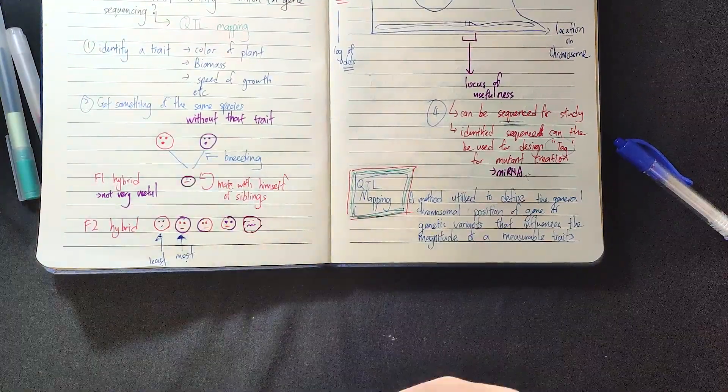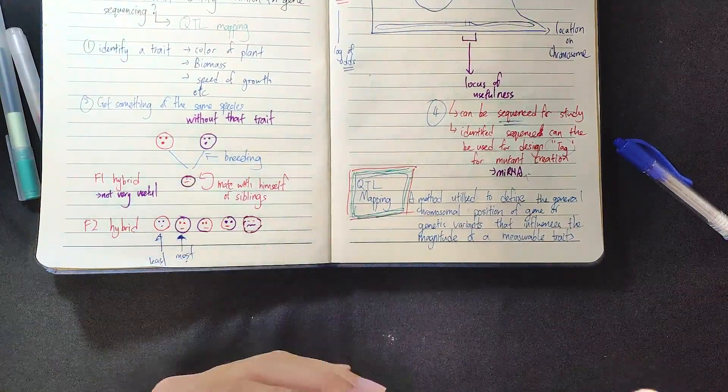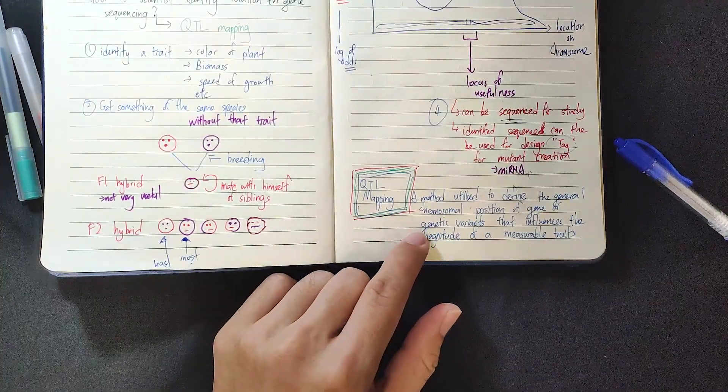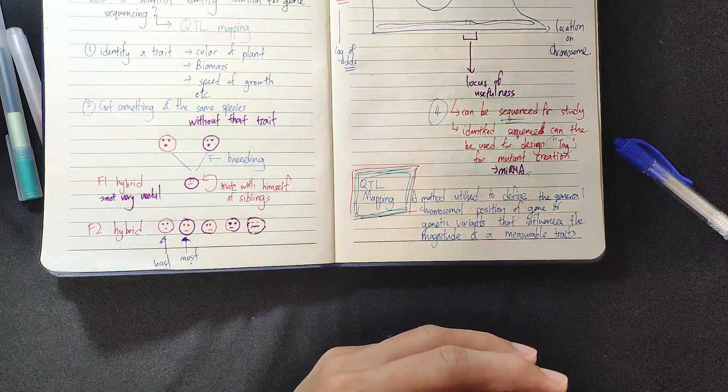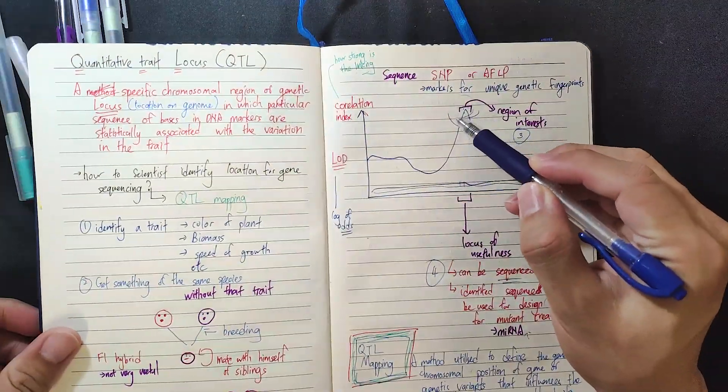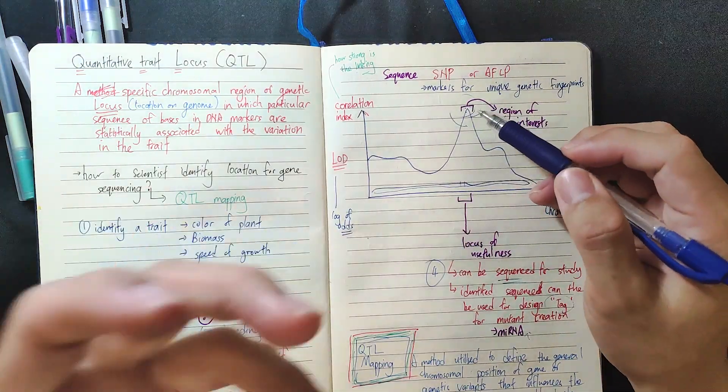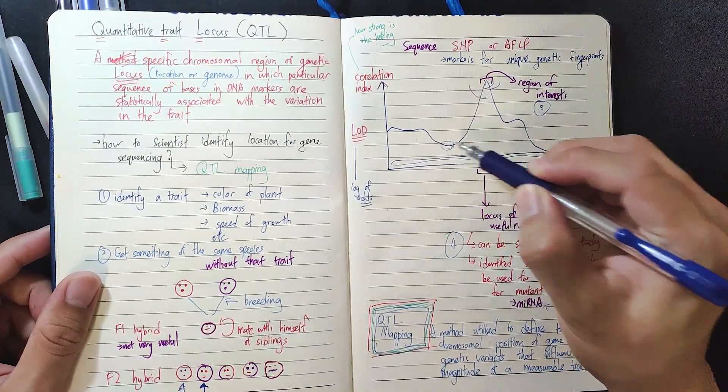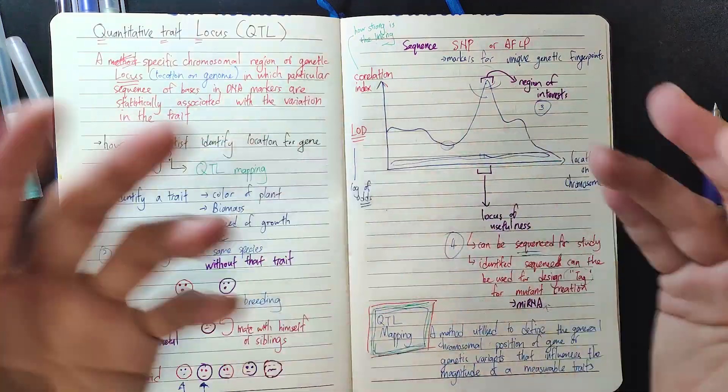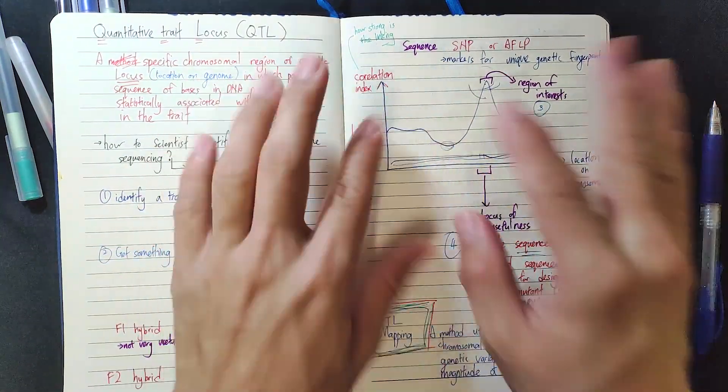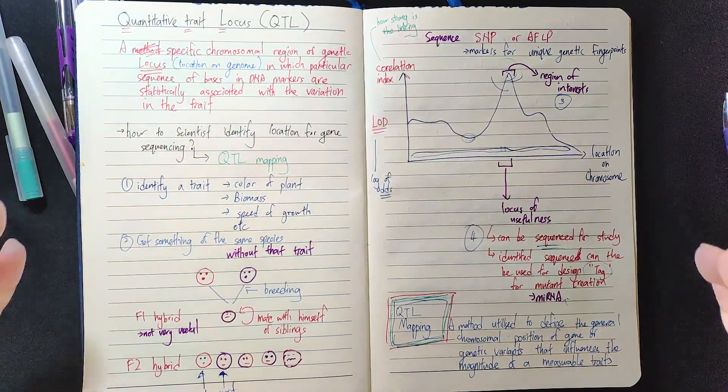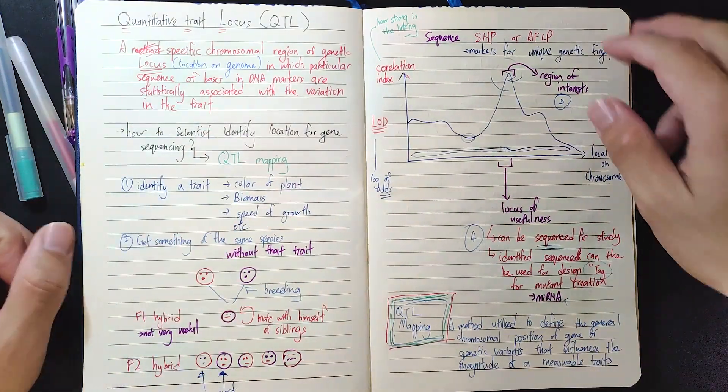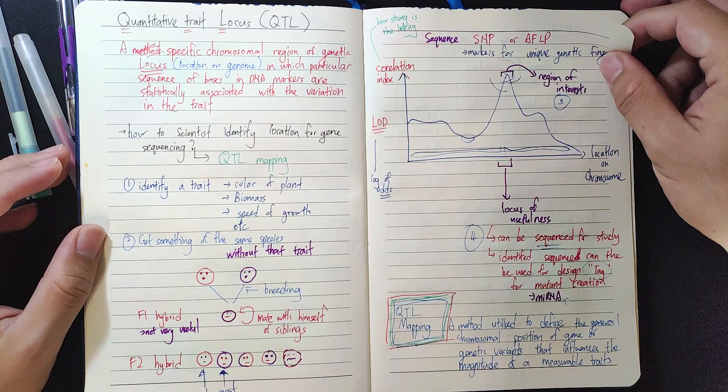So the whole process that we're trying to say here is actually how QTL mapping works and what is a QTL. So QTL is a locus, it's a location on a gene which is particularly linked to a certain trait which we have measured quantitatively. So quantitative trait locus. And mapping is trying to map the trait and the genetic locus together. So the formal definition of QTL mapping is a method utilized to define the general chromosomal position of the gene or gene variants that influence the magnitude of a measurable trait. So I hope you learned something. Happy unwinding, thank you.